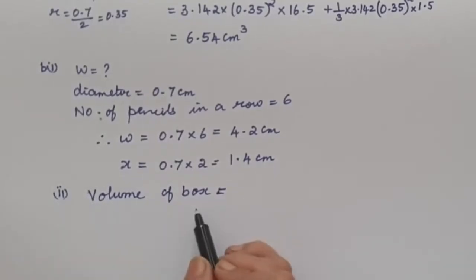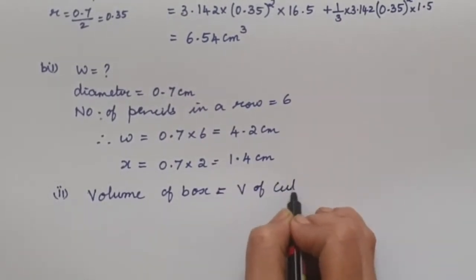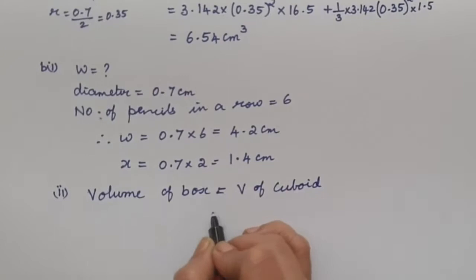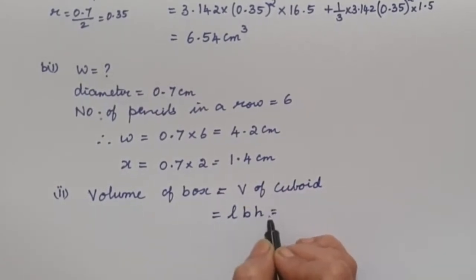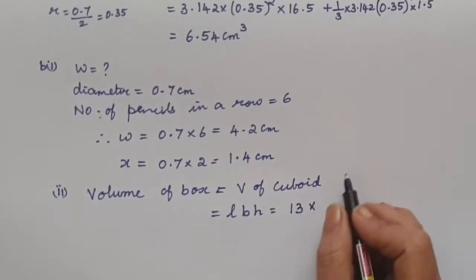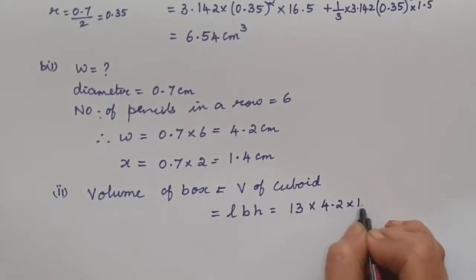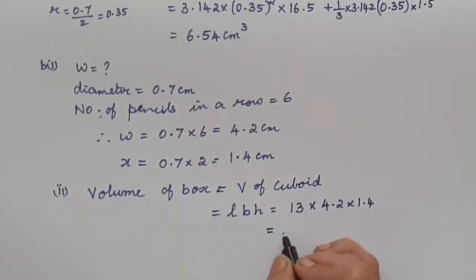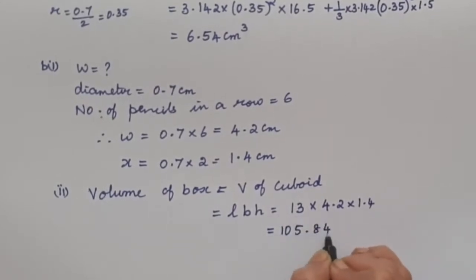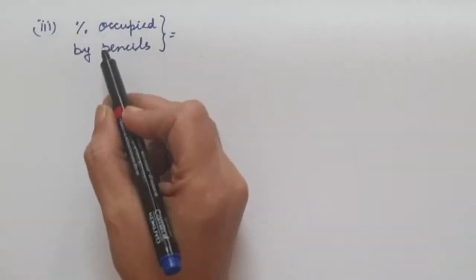For part B2, the volume of the box is the volume of a cuboid. Volume of cuboid is L × B × H. Our length is given as 13, then 4.2 and 1.4. When you multiply everything, you get 105.84. Written to 3 significant figures, that is 106 cm³.